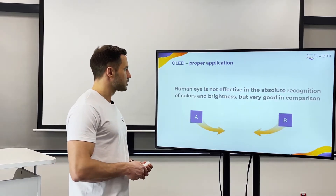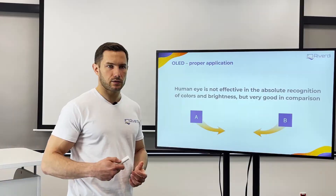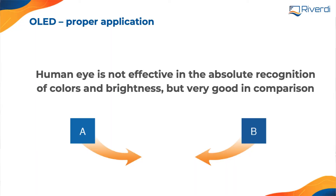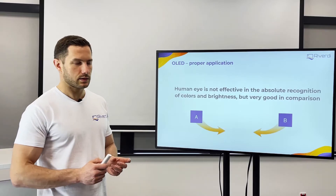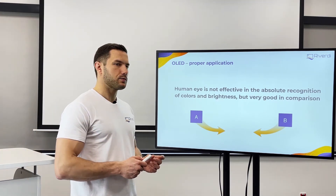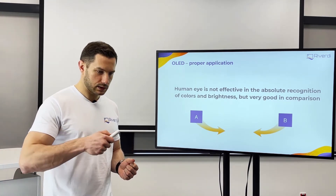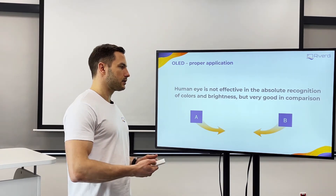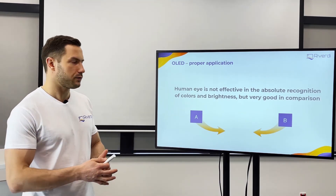Let's talk about the adaptation of OLED displays. With a TFT, we have a backlight, so if the backlight decreases in brightness, the whole display decreases in brightness. But with OLEDs, every pixel is its own backlight — it's emitting light itself. If we have a lot of pixels next to each other and we use them, the brightness decreases according to use time.